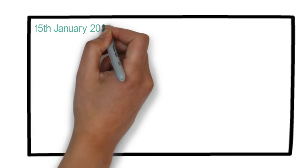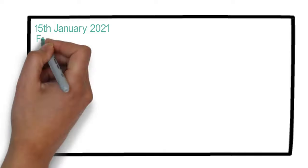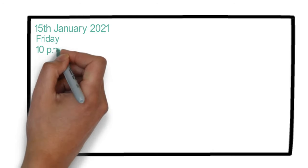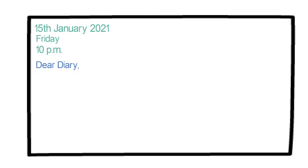Let's write the date on which we are writing. In our case, it is 15th January 2021. Then the day, which is Friday. Then the time, which is 10 PM. Then comes the salutation: 'Dear Diary.' Now let's write a heading: 'An Encounter with My Old Friend.'